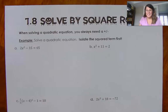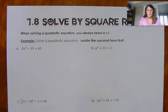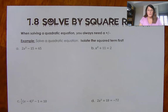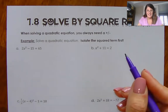Today we're talking about solving by square roots. One of the methods we can use to solve a quadratic equation is square roots. When you do, you're going to always have a positive or a negative for your answer when you're the one taking the square root. The trick is you want to get the square term all by itself first, and then take the square root.